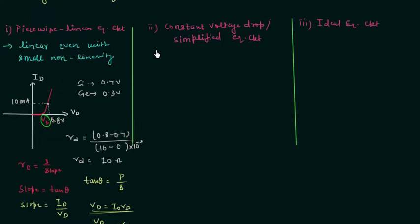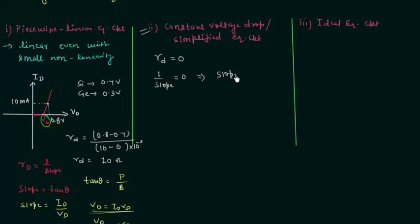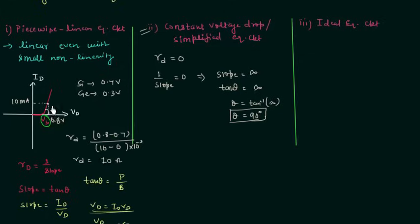Now we will move to the constant voltage drop model, or simplified model. In electrical circuits, the resistance of the diode is very small compared to the resistance of other elements, so it can be neglected. There are two assumptions: first, consider the linear curve instead of a small non-linearity; second, consider diode resistance Rd equal to 0. When Rd = 0, it means 1/slope = 0, so slope equals infinity, meaning tan(θ) equals infinity, therefore θ equals 90 degrees.